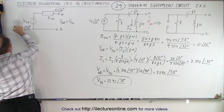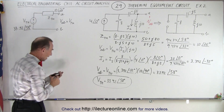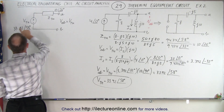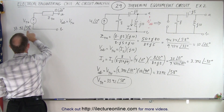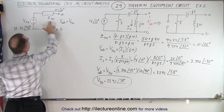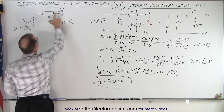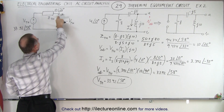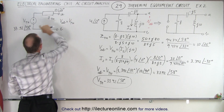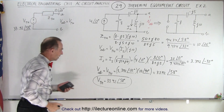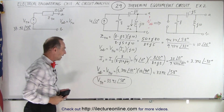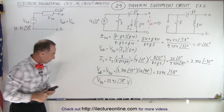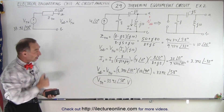So now we have the complete Thévenin equivalent circuit with a Thévenin voltage of 33.92∠58° and a Thévenin impedance of 10∠26°. The voltage from A to B is the same as the Thévenin voltage: 33.92 volts at a phase angle of 58 degrees. And that is how it's done.